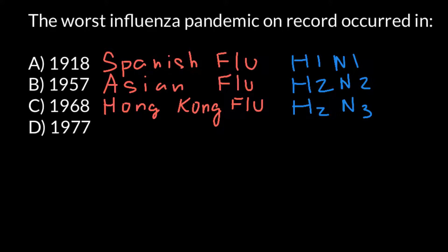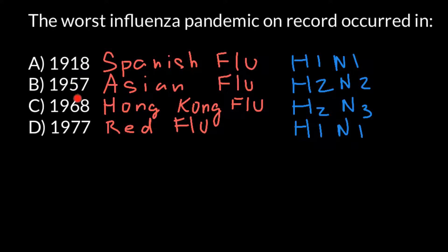We know the 1977 event as the Russian flu or Red flu, and there is an interesting story about this epidemic. It was caused by a strain which is H1N1. This is interesting because the influenza virus highly mutates every year — as you can see, every pandemic has different surface proteins, different antigens. But after almost 30 years, the same variant strain of the virus appeared again.